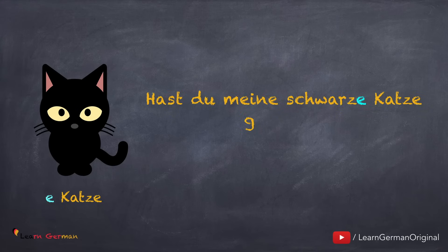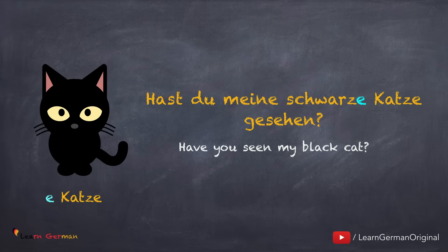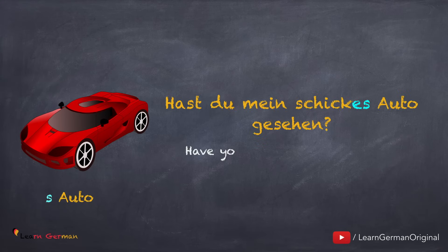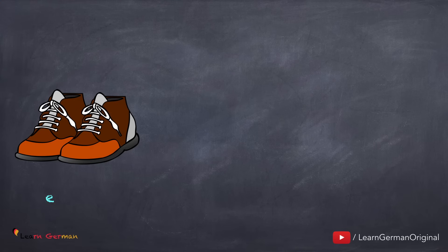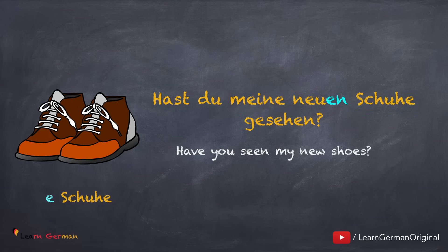Das nächste Beispiel: Hast du meine schwarze Katze gesehen? In diesem Fall bekommt das Adjektiv die Endung -e. Hast du mein schickes Auto gesehen? In diesem Fall bekommt das Adjektiv -es. Und woher kommt dieses -es? Ja, genau! Dieses -es kommt von dem bestimmten Artikel das. Und hier ist das Beispiel für Plural: Hast du meine neuen Schuhe gesehen? Hier bekommt das Adjektiv mit Plural die Endung -en, genauso wie bei den Negativartikeln.